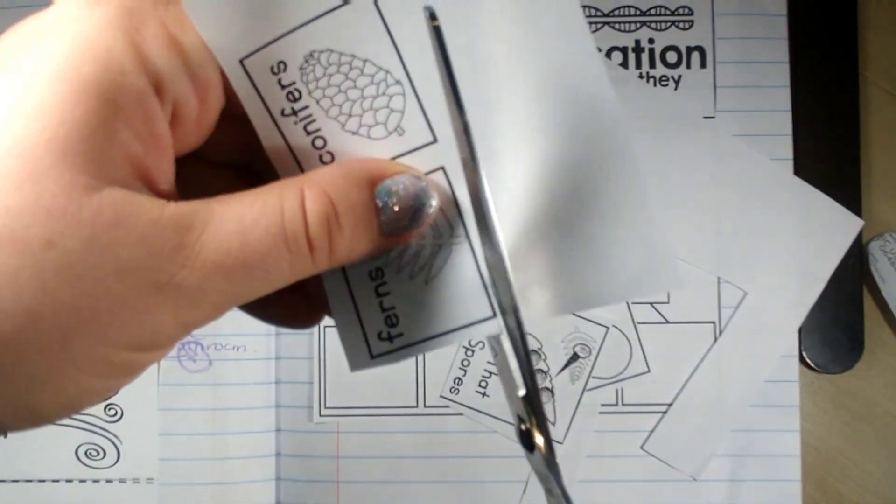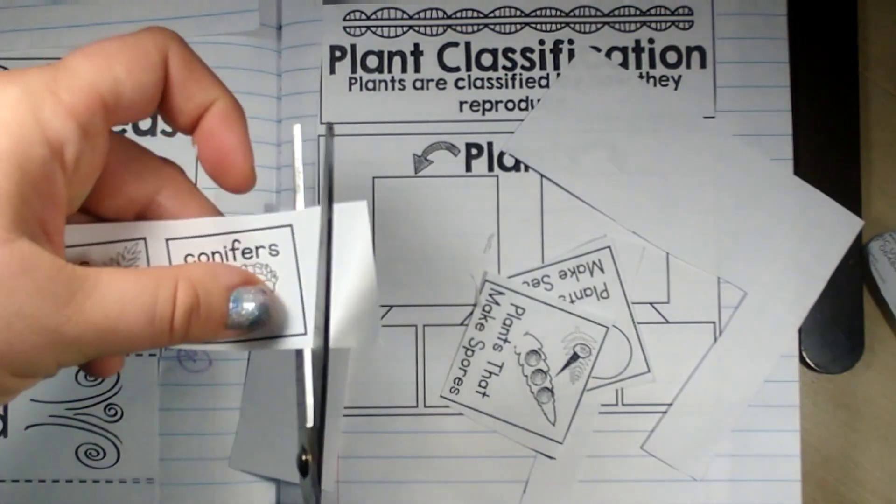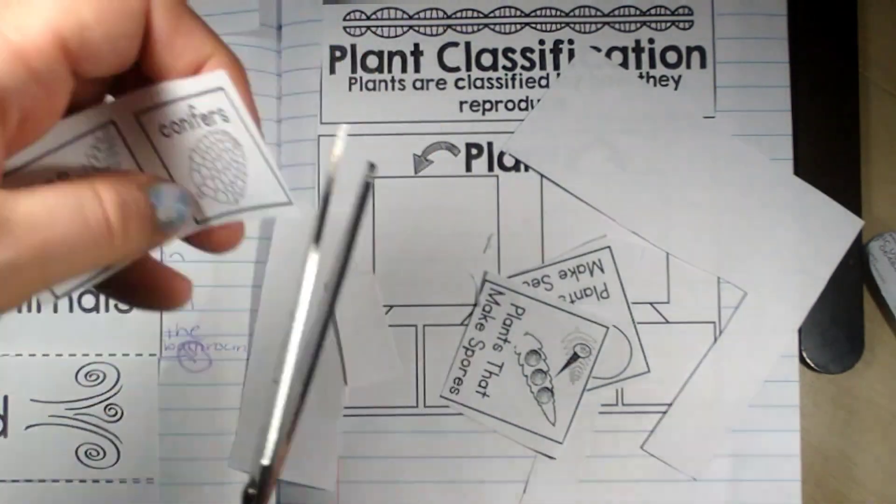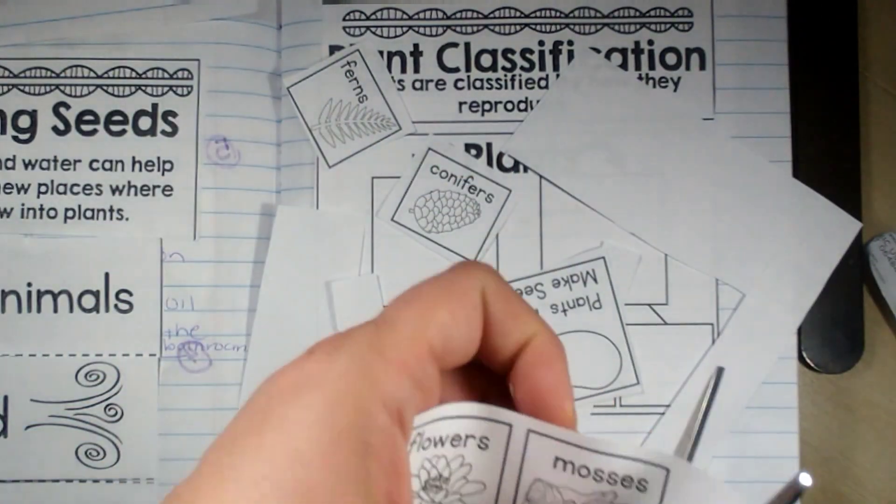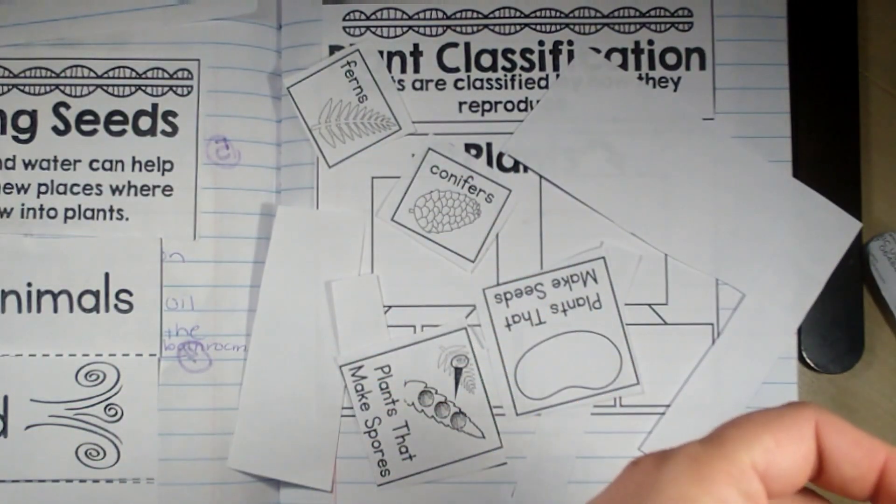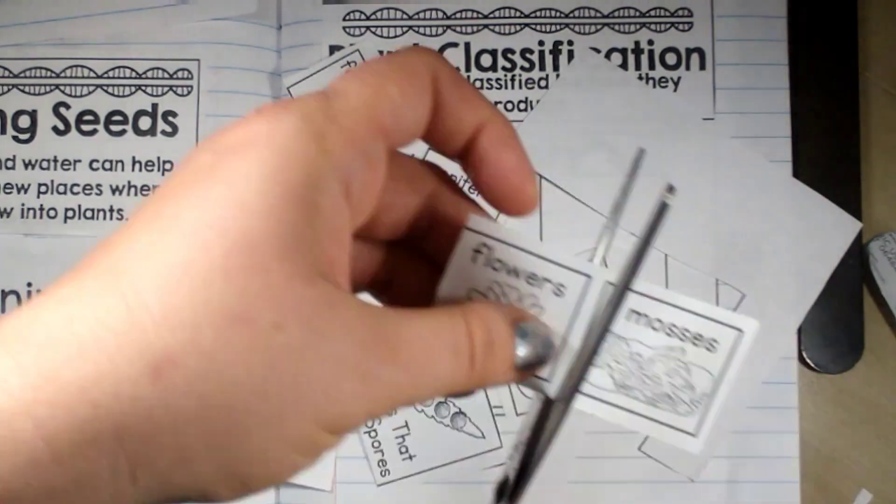All right, so we have four different kinds, four different examples. We have ferns and conifers. We have flowers and mosses. I'm sure you've heard of many of those names.